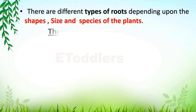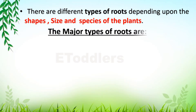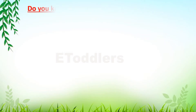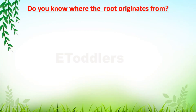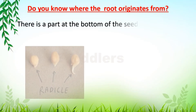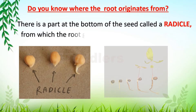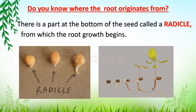The major types of roots are tap root, fibrous root, adventitious root, and tuberous root. Do you know where the root originates from? Yes, there is a part at the bottom of the seed called a radicle from which the root growth begins.